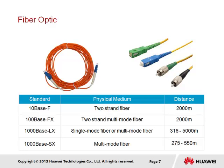Single mode fiber supports only a single optical signal, with transmission distances reaching tens of kilometers. Multi-mode involves transmission of multiple optical signals over the optical fiber but has a much shorter transmission range. Common connector types include the ST, SC, and LC connector types.